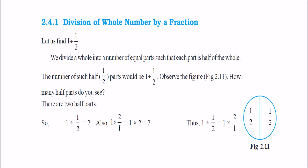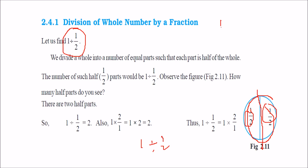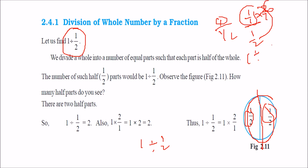Let us first take the example of dividing 1 into halves — 1 divided by half. This whole is 1 and we are dividing it into half: this half and this half. These are 2 halves. So 1 divided by half means 1 by (1/2), which is nothing but 1 by 1 divided by 1 by 2. Essentially, 1 divided by half is nothing but 1 into 2 by 1.